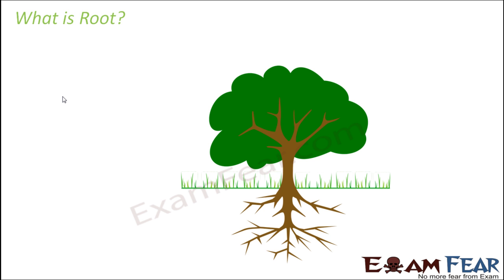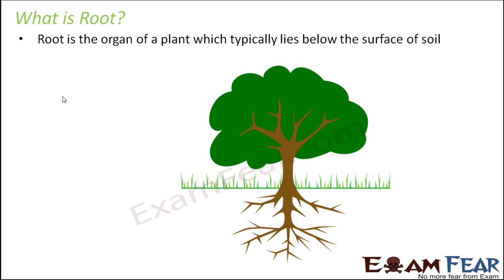The first question that comes to mind is: what is root? Root is that organ of a plant which typically lies below the surface of soil. Please note the word 'typically' here — it is not that it always lies below the surface of soil, but in most cases it does. It is only in some special cases where it doesn't lie below the surface of soil.